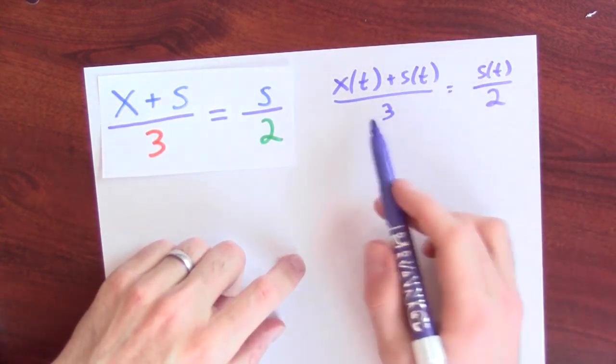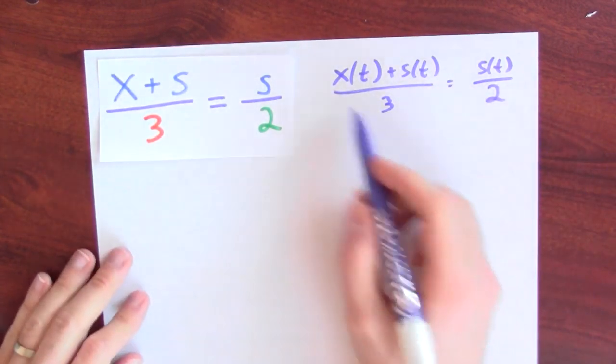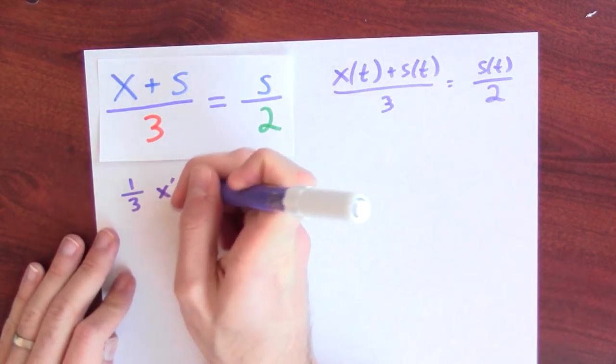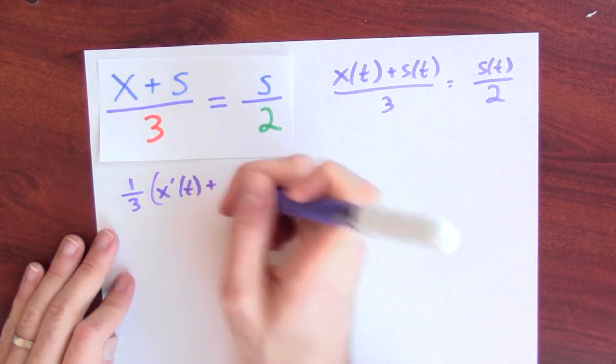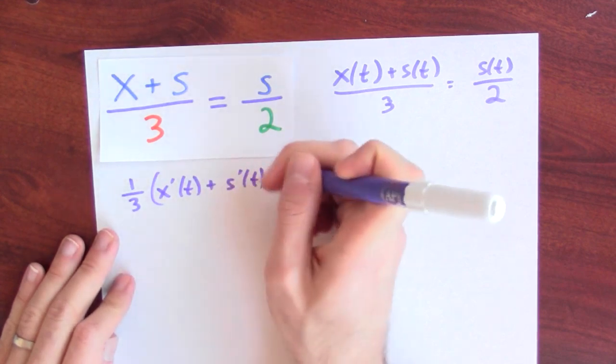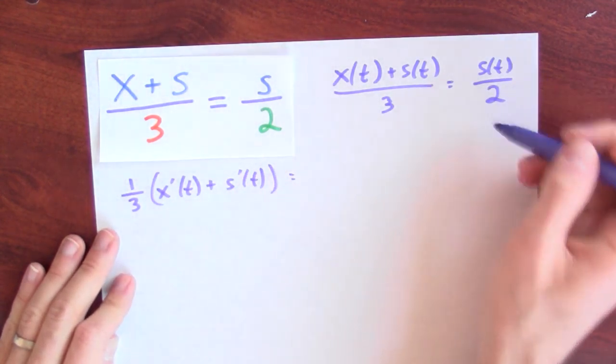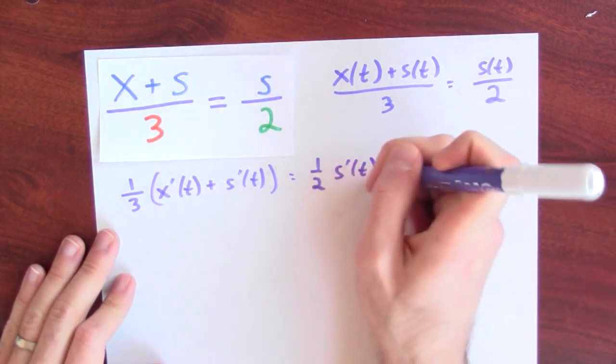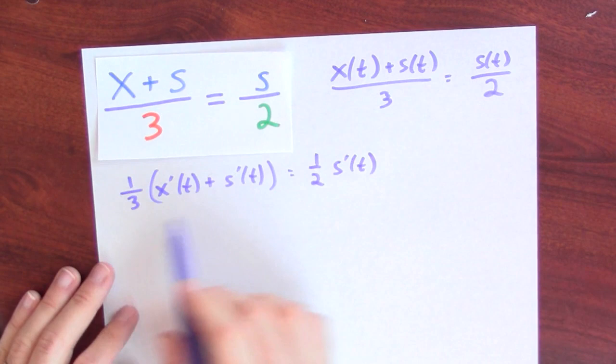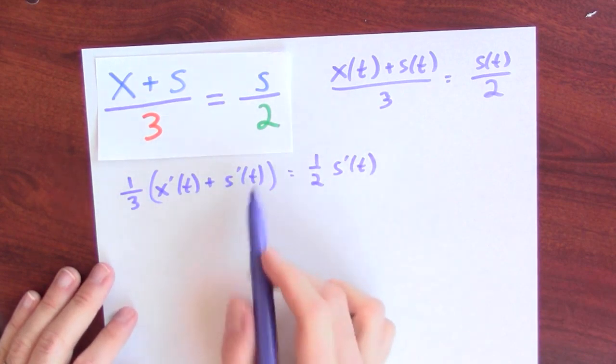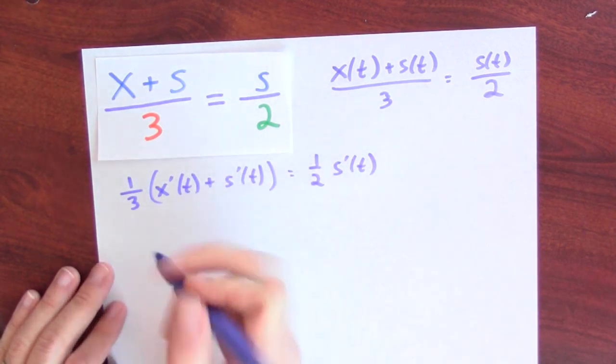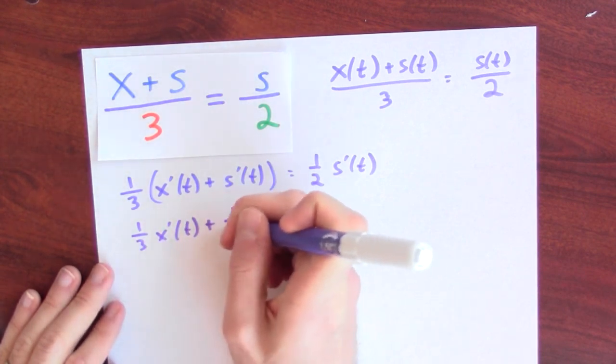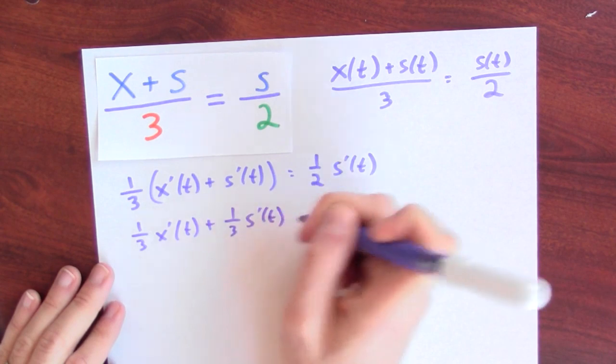And I can differentiate both sides of this equation. The derivative of this is 1/3 the derivative of x plus the derivative of s. And now I could solve for the derivative of s. Let me first expand this out. I've got 1/3 derivative of x plus 1/3 derivative of s.